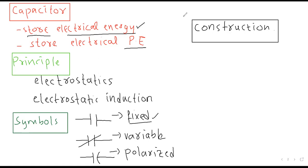اب capacitor کی construction پر بات کرتے ہیں۔ Construction میں دو حصے ہوتے ہیں: پہلا conducting plates — دو metal plates جو charges کو جمع کرتی ہیں۔ یہ conducting plates زیادہ تر thin اور light ہوتی ہیں۔